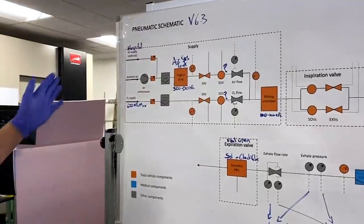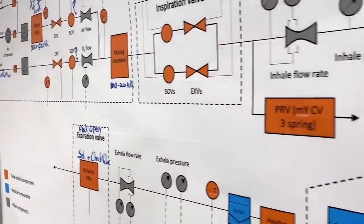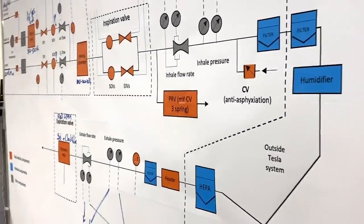So here's our kind of high-level schematic design. You can see that all the red parts here are Tesla vehicle parts. So we've used a lot of those.